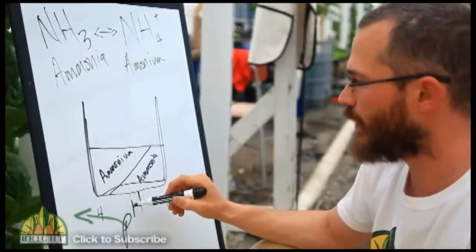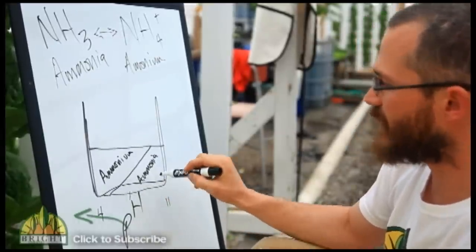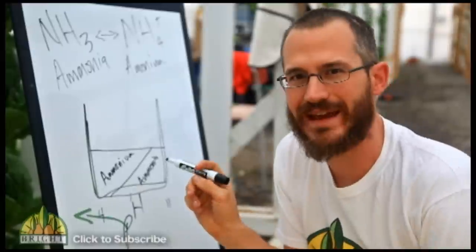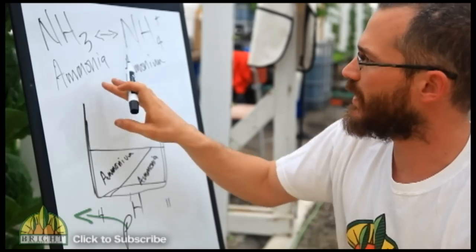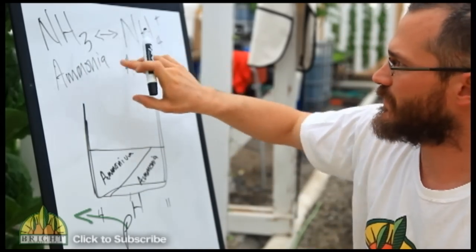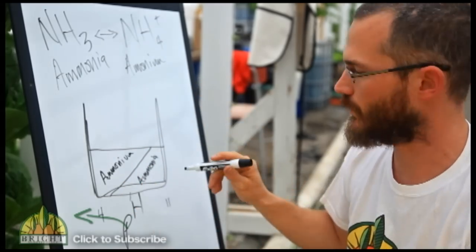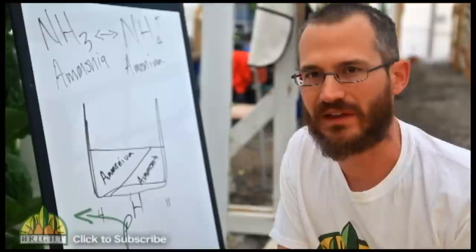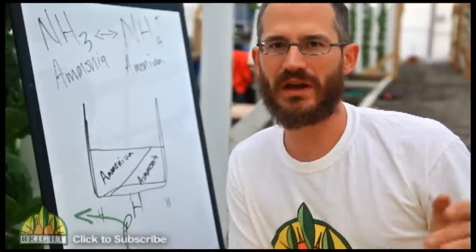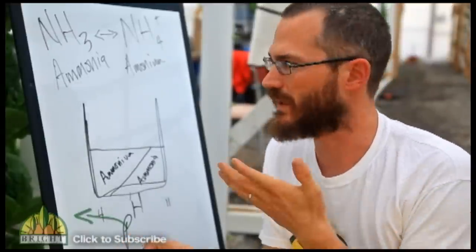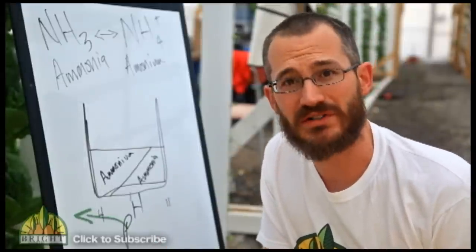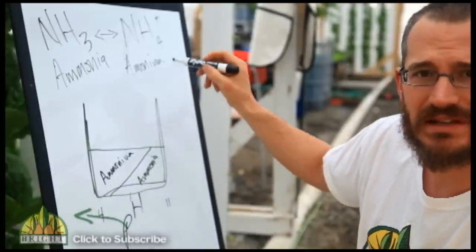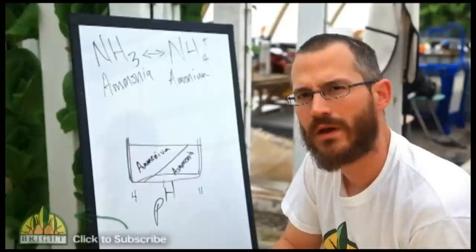Now as our pH goes up, as it goes up above 7 here, we start to see a lot more ammonia. And by the time we hit around pH 8, 50% of this interaction is about 50-50 at that point essentially. So you've got about 50% ammonia, 50% ammonium. And as you go up, that increases dramatically. At 9, your ammonia is the dominant thing. There's hardly any ammonium left. So this is really important to understand. We want to keep our pH low if we can, so that our ammonium is the dominant species in our system.